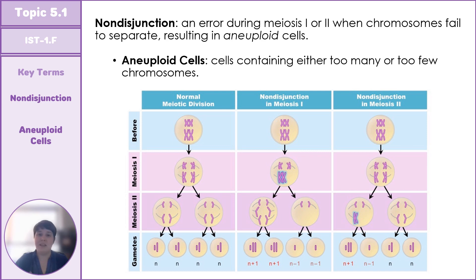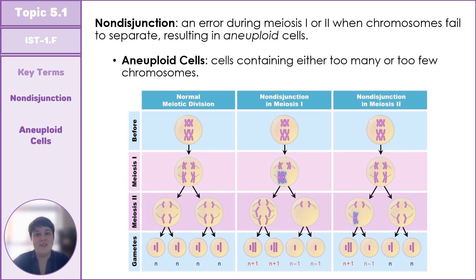As we get older, this cellular machinery wears out and non-disjunction events become more likely. In the next topic we will look at how genetic information and variety are created. That wraps up topic 5.1 — see you in the next video for topic 5.2, where we discuss genetic variation and meiosis.